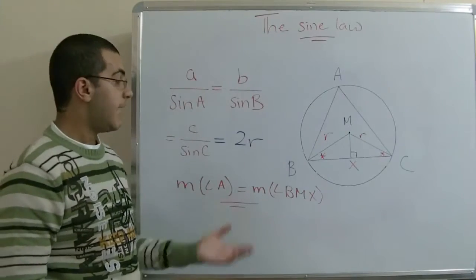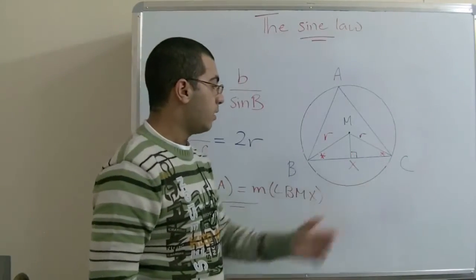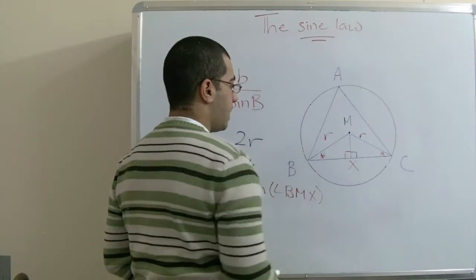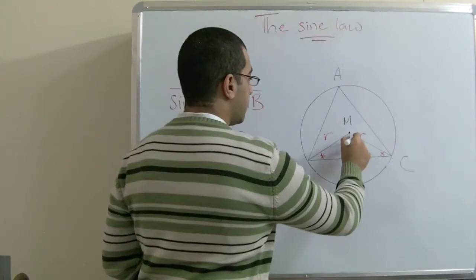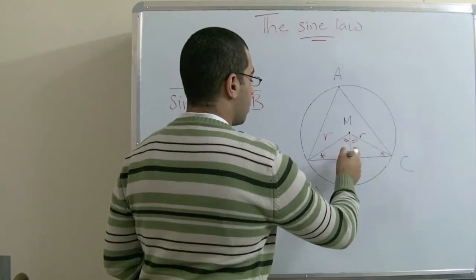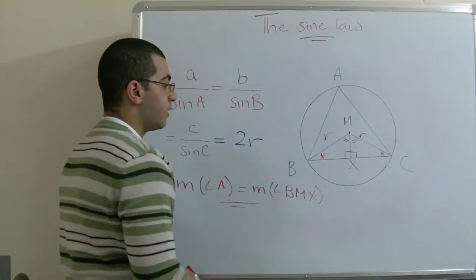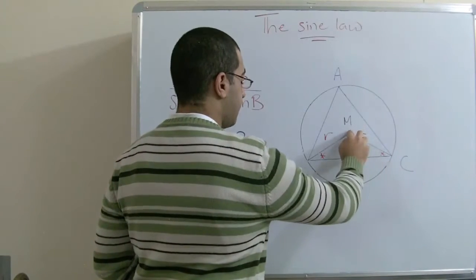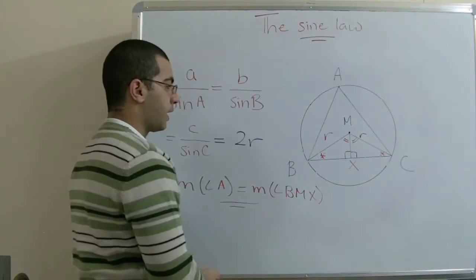And as this is a right angle, these two angles are also equal in measure, and accordingly those are equal in measure. So the triangles BMX and CXM are both congruent.